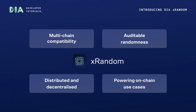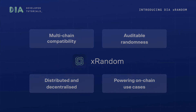And fourth, power your on-chain use cases: DRX Randomness can support a wide range of Web3 use cases including gaming, lotteries, prediction markets, NFT launches, and many more.